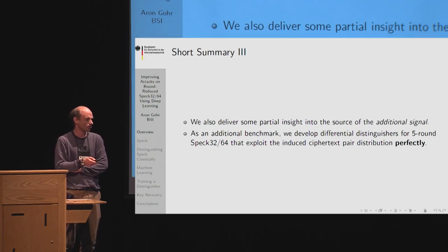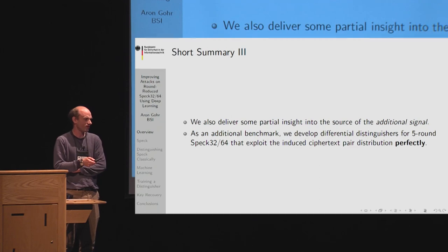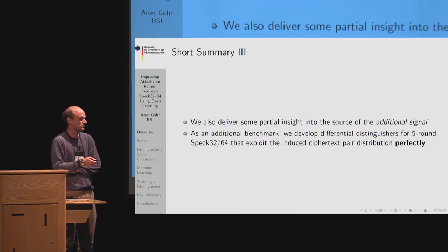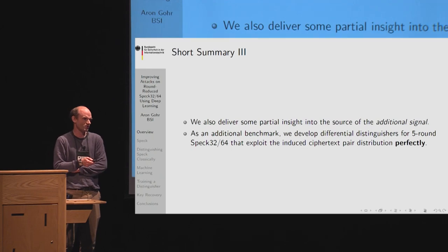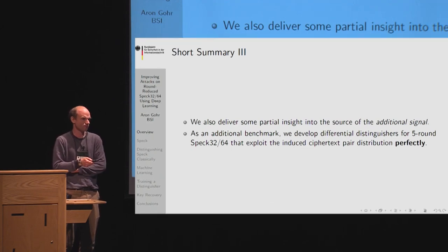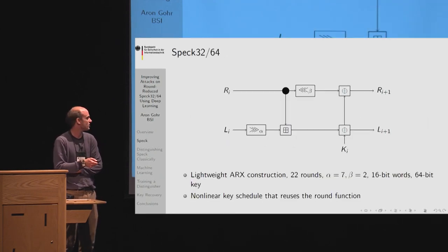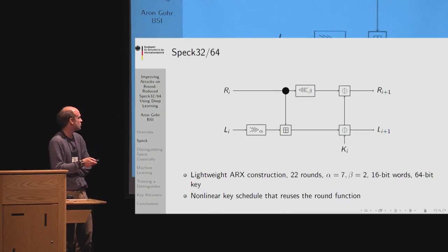As an additional benchmark, we also develop differential distinguishers for five-round SPECK that exploit the ciphertext pair distribution perfectly. These are of course a little bit better than the neural networks, but also much slower.